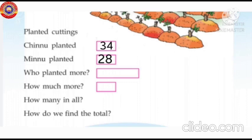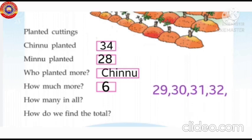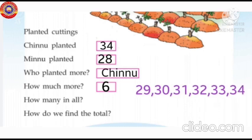Who planted more? From 28 to 34: 29, 30, 31, 32, 33, 34. Six numbers are there. So Chinnu planted 6 more.